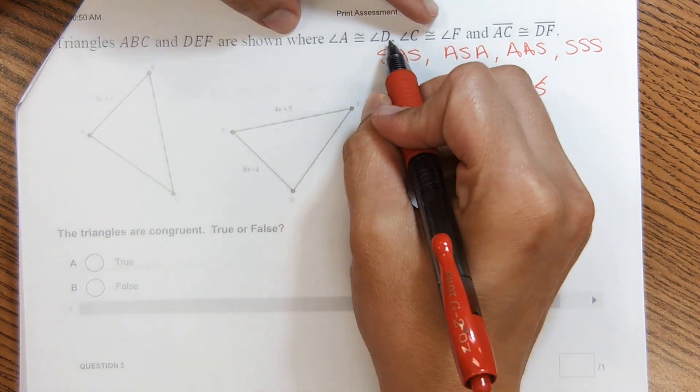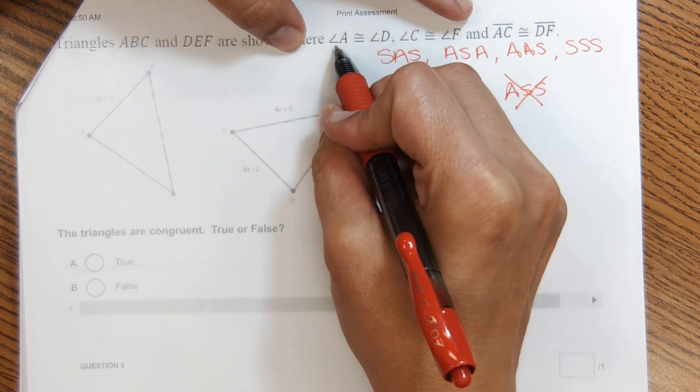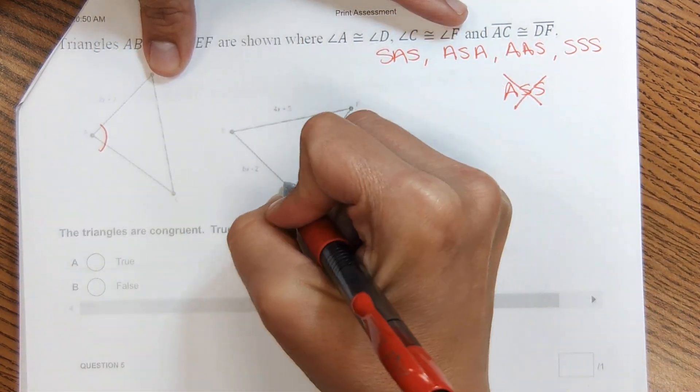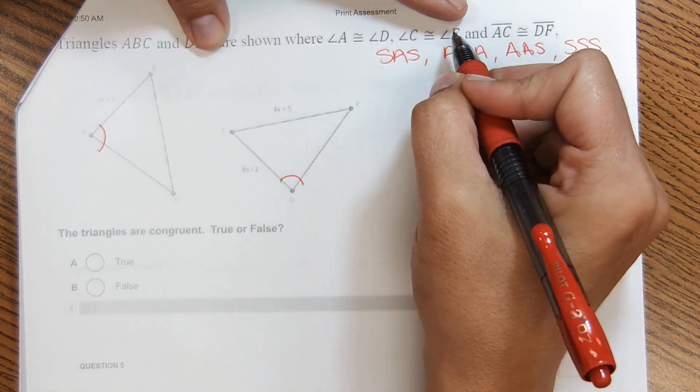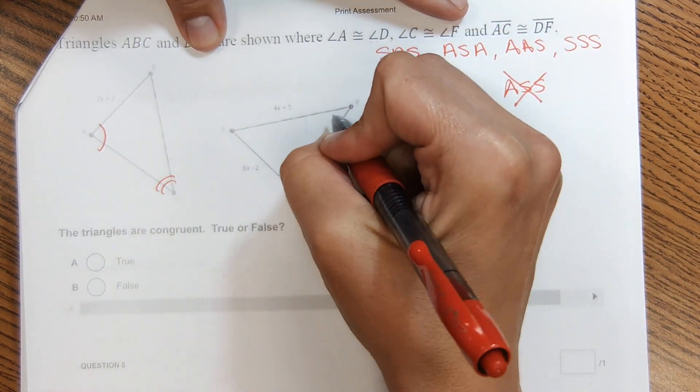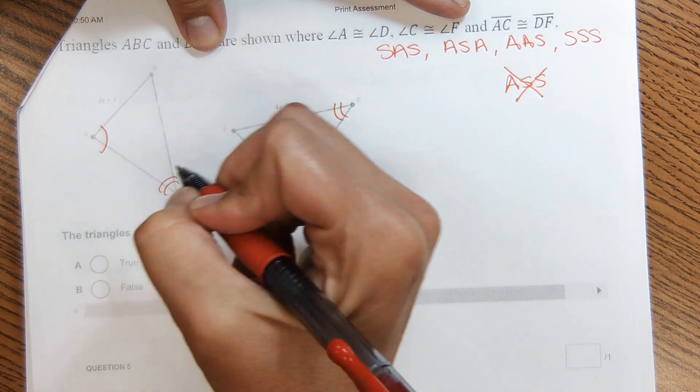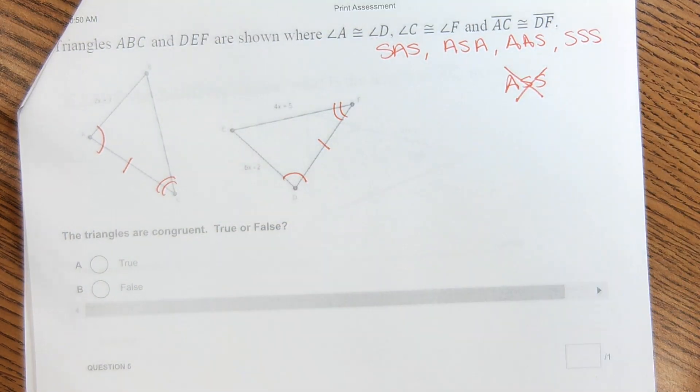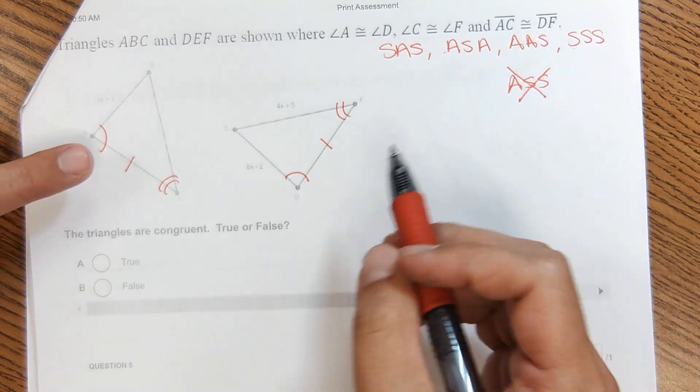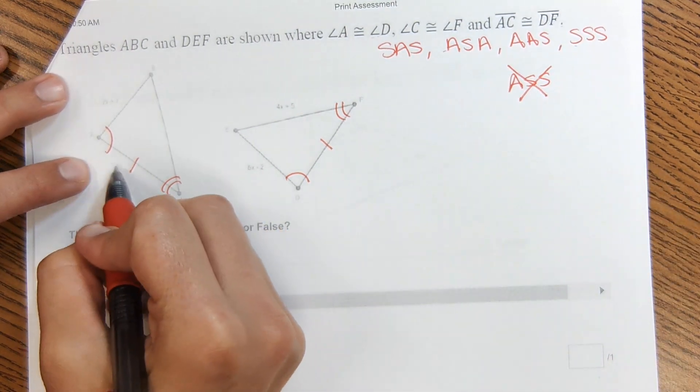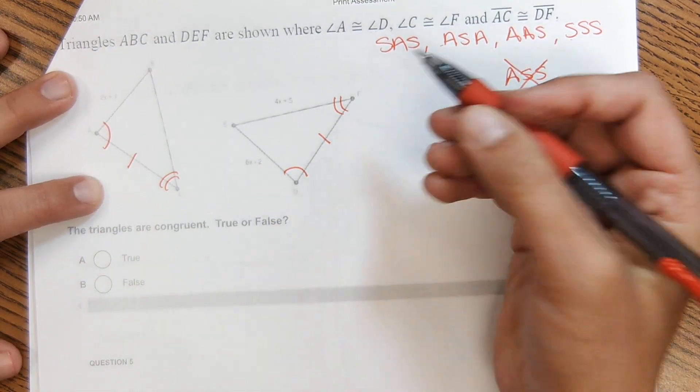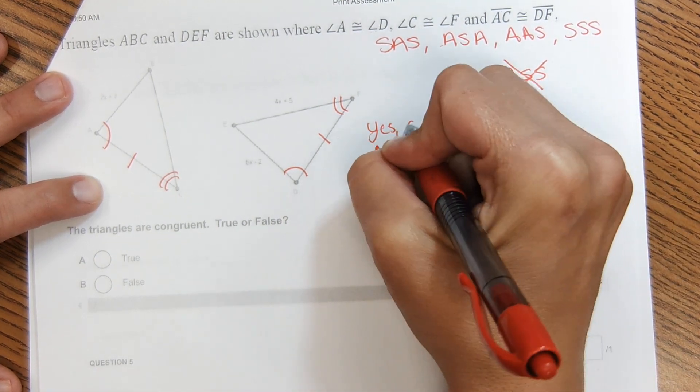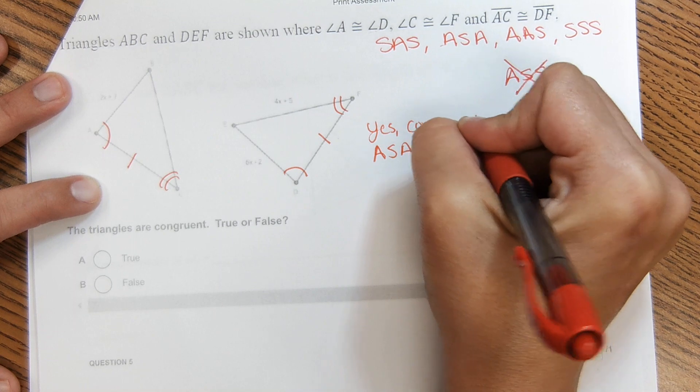Okay, so I'm going to label the corresponding or equal parts. So A is equal to D. And then C is equal to F. And then segment AC is equal to DF here. Okay, so I'm looking for one of these matching parts on both. And it looks like I have angle-side-angle, angle-side-angle matching on both. So therefore, yes, they are congruent. So true.